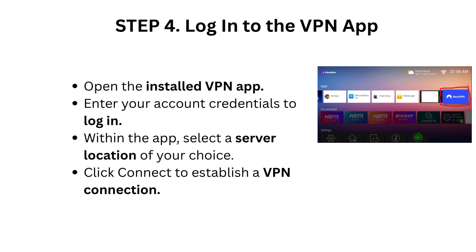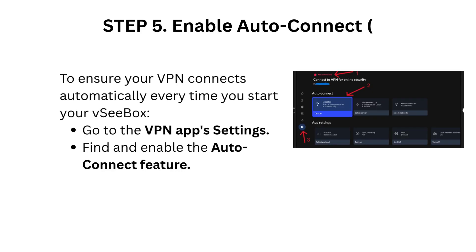Step 4: Log in to the VPN app. Open the installed VPN app and enter your account credentials to log in. Within the app, select a server location of your choice and click Connect to establish a VPN connection.